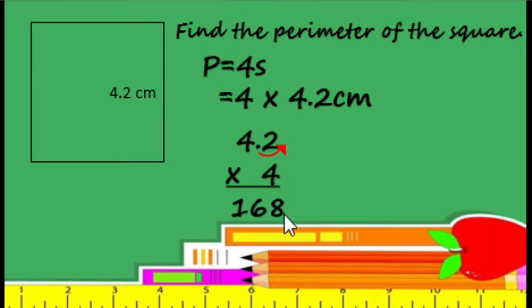So we start here. We have 1. The decimal point goes between 6 and 8. So the answer is 16 and 8 tenths, or 16.8.